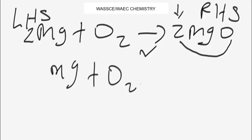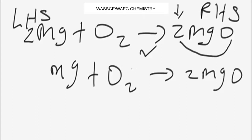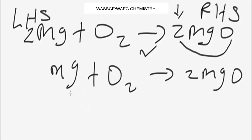Now, an important note: when balancing, don't put the coefficient as a subscript below the element. This is chemically wrong. Whenever you want to add a coefficient to an element or compound, always place it beside the element or compound — not below or at the base. That is wrong; this is the right way to do it.